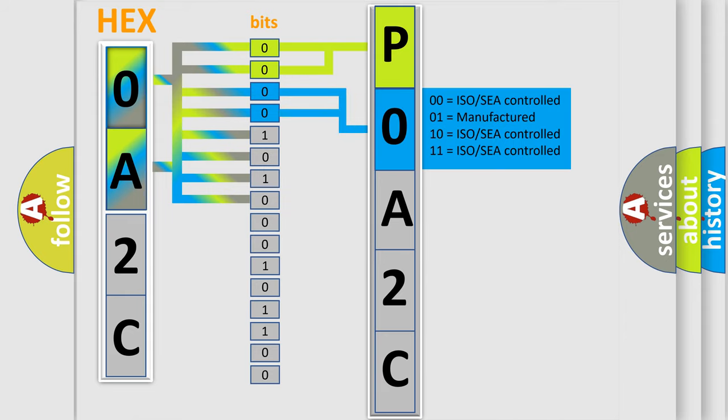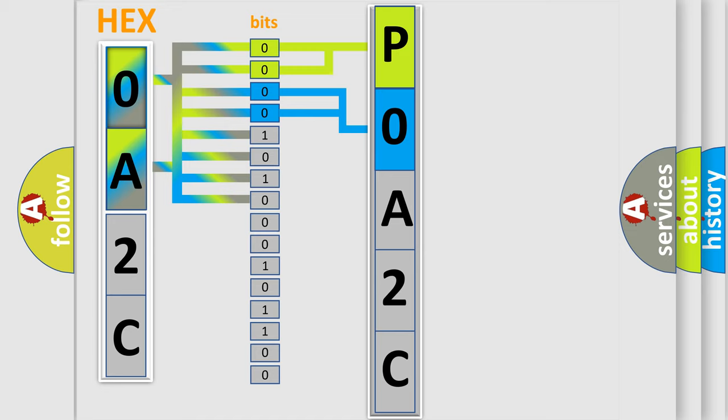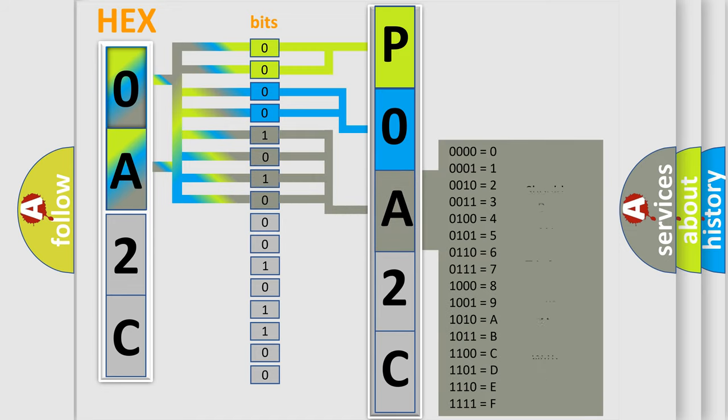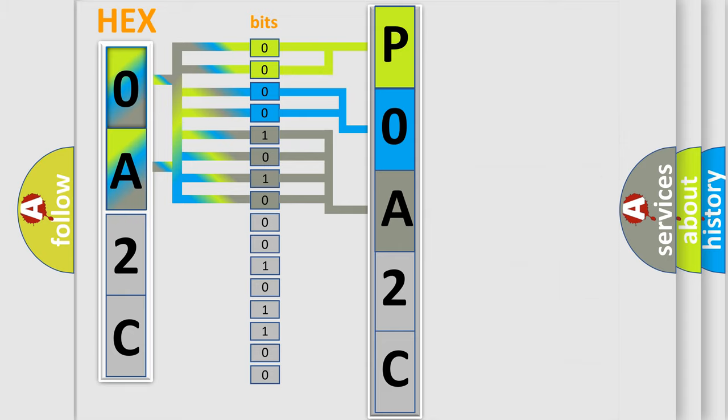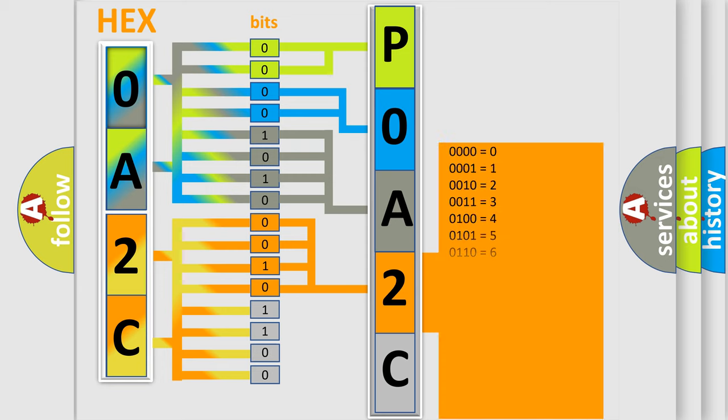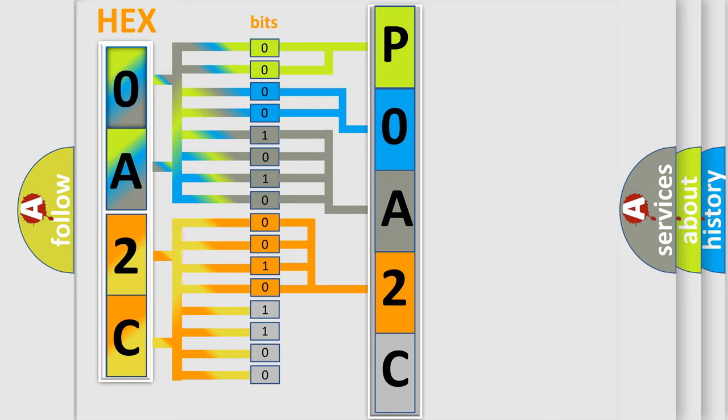A single byte conceals 256 possible combinations. We now know in what way the diagnostic tool translates the received information into a more comprehensible format. The number itself does not make sense to us if we cannot assign information about what it actually expresses.